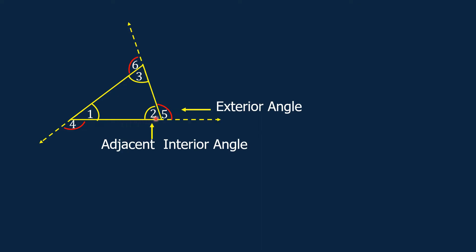Angle 2 and angle 5 form a linear pair, and they are supplementary. The same thing is true with angle 3 and angle 6. Angle 3 and angle 6 form a linear pair, and they are supplementary.